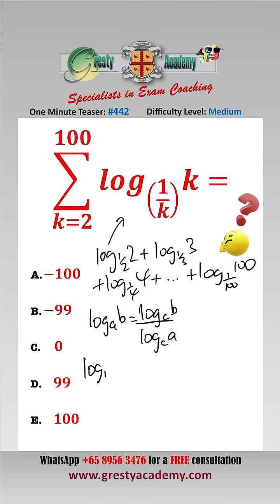Then log to the base one over k of k equals, changing the base to k, log to the base k of k over log to the base k of one over k.